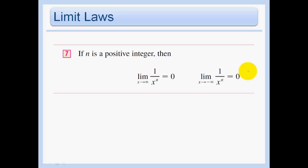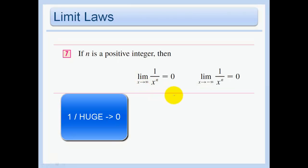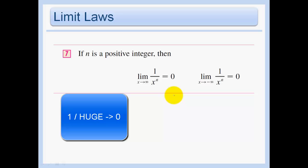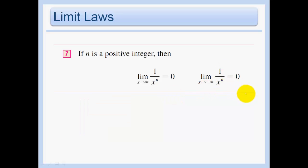Two important limit laws: the limit as x approaches infinity of 1/x^n equals 0, and the limit as x approaches negative infinity of 1/x^n equals 0. The way to think about it: 1 over a really huge number approaches 0. Similarly, 1 over a huge negative number is like negative 0 — but we just say 0.